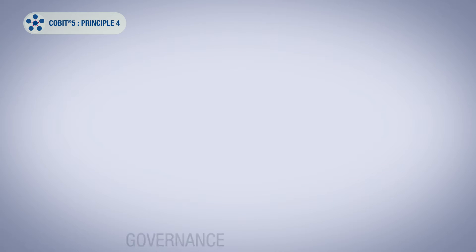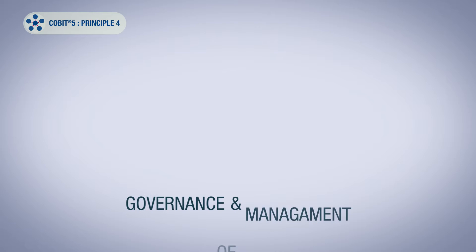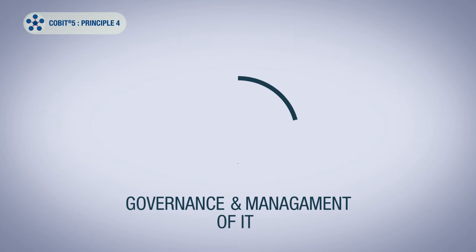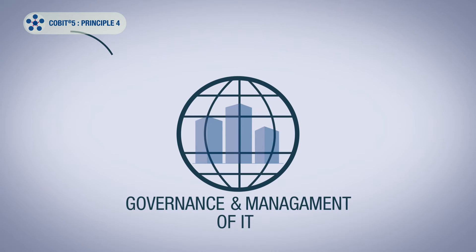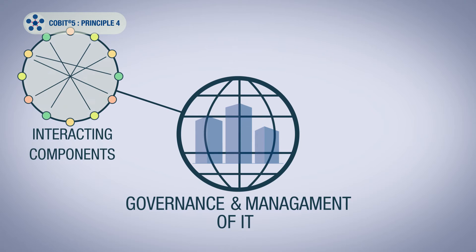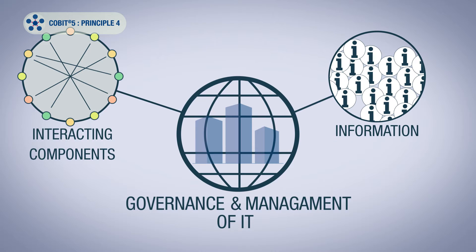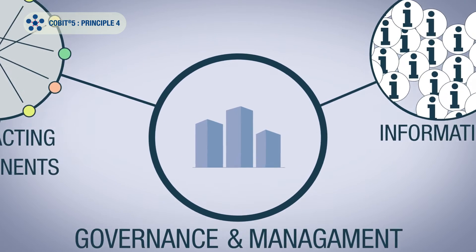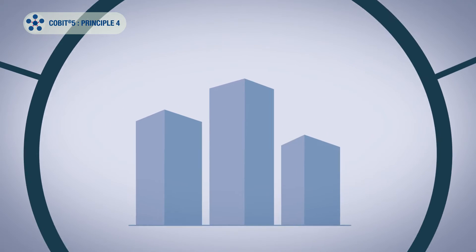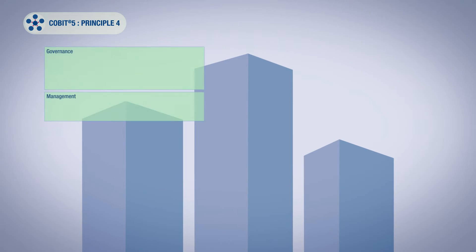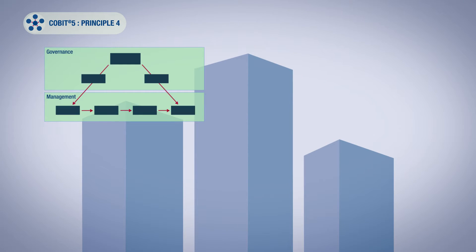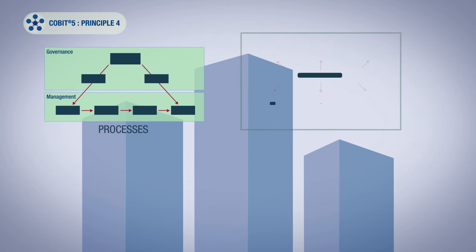Efficient and effective governance and management of IT across the organisation requires that we consider many disparate but interacting components. So when we make decisions, it's necessary to have as much information available to us as possible, which means that we need to have a complete view of the organisation — in our case, specifically of the governance and management processes and structures.